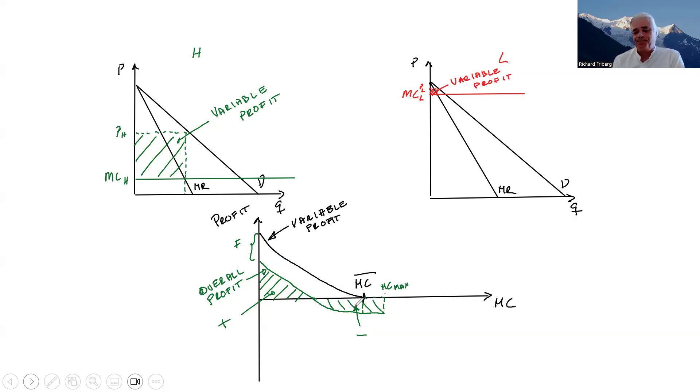Some of the marginal cost draws are going to be low enough that you choose to operate. Had you known that you would be this inefficient, you wouldn't have purchased a lottery ticket. But now that you purchased a lottery ticket, that's a sunk cost.